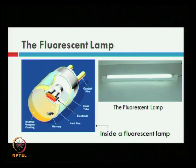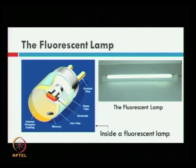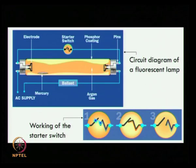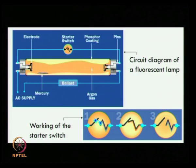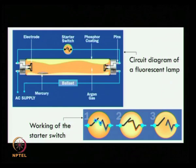A fluorescent lamp consists mainly of a glass tube with internal phosphor coating, two electrodes, contact pins, argon, and a drop of mercury. When turned on, current first flows through the starter circuit through a small arc through a bimetallic strip. This current generates a magnetic field in the ballast and heats up the filaments, emitting electrons.